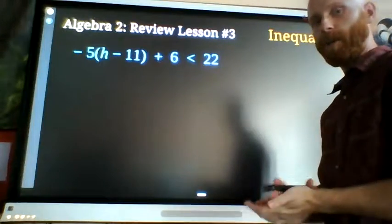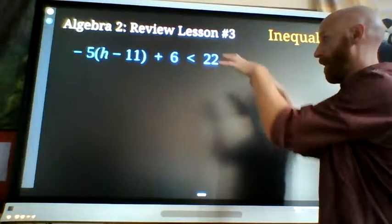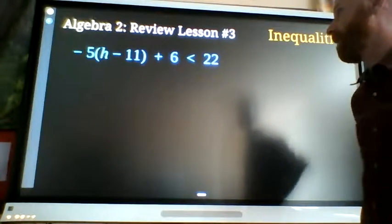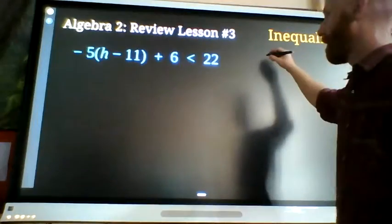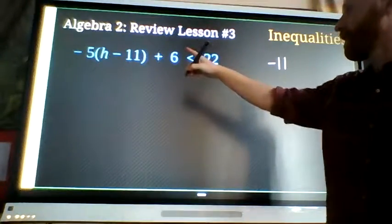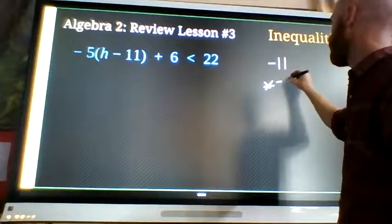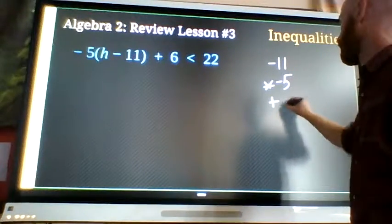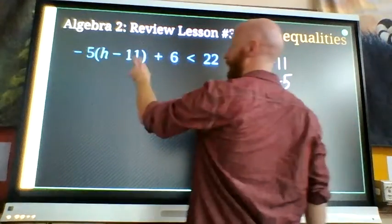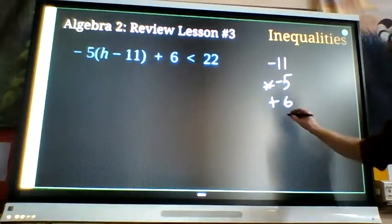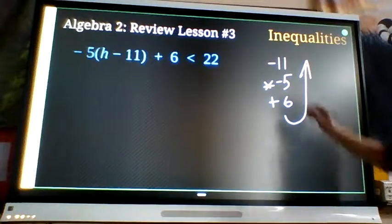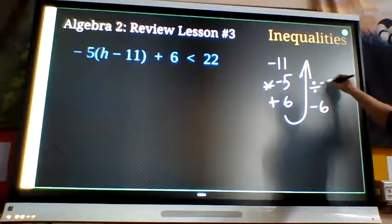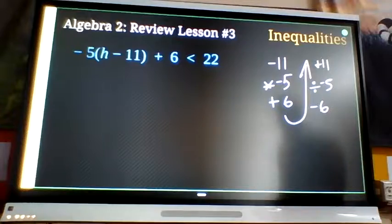There's one thing that we have to be careful of when we are undoing operations with an inequality and it will occur in this problem so I'll call your attention to it here. But what's happening to h? We are subtracting 11, then multiplying by negative 5, then adding 6. Those are the 3 things we are doing to h. Minus 11 times negative 5 plus 6. I'm going to undo those things in the reverse order, so we will be subtracting 6, dividing by negative 5, and then adding 11 to isolate our variable.